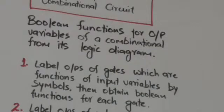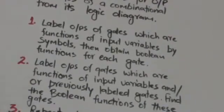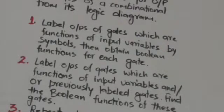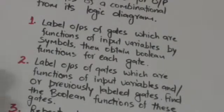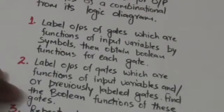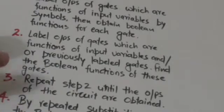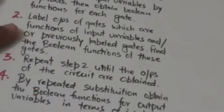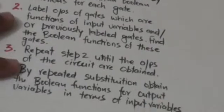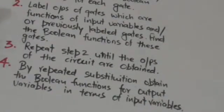Then we obtain boolean functions for each gate. Second, we label outputs of gates which are functions of input variables and/or previously labeled gates, and find boolean functions for these gates. We repeat this step until the outputs of the circuit are obtained.